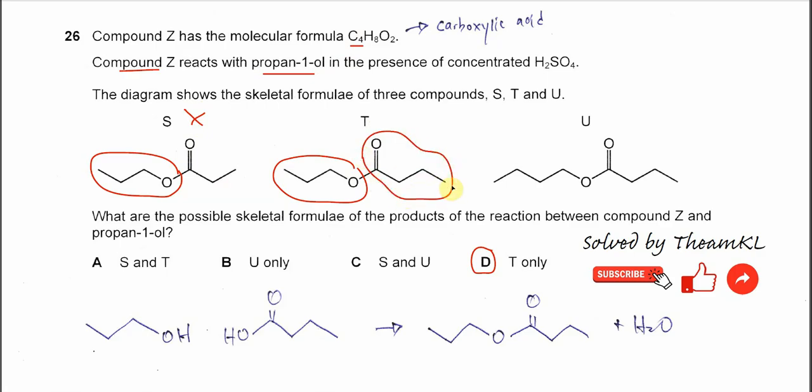And this one, U, is obviously wrong because it's not from the propan-1-ol, right? It's longer - 1, 2, 3, 4, four carbons. Okay, so the answer confirmed is D. Okay, that's all, thank you.